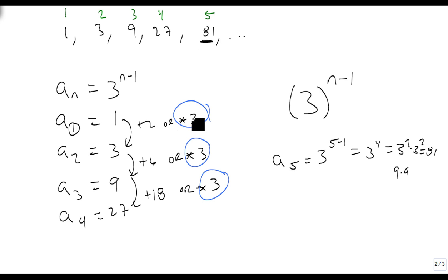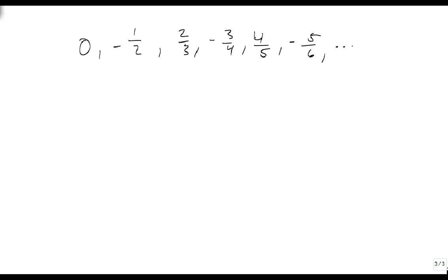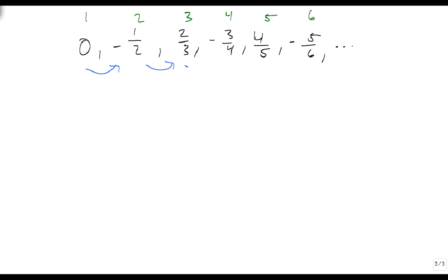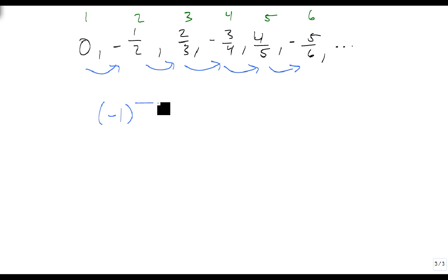This next one is a little bit harder. We still have our first, second, third, fourth, fifth, and sixth terms. The issue here is that we're changing signs every time. A really useful rule to know is that if we're changing signs every time, that means we have negative 1 to some power that has an n in it.